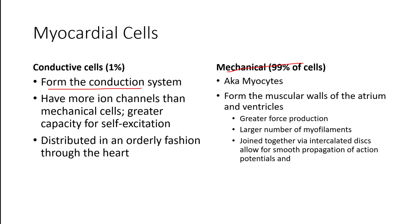Mechanical cells have greater force production and a lower amount of ion channels, but they're designed to propagate the signals produced by the conductive cells and to pump — producing the force that pumps blood from our heart throughout our bodies. It's really important for those two types of cells to work in coordination with each other.